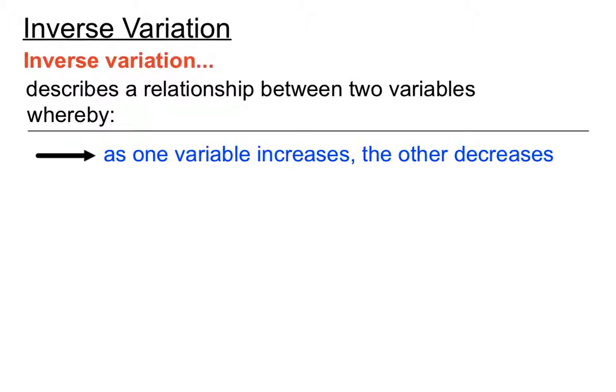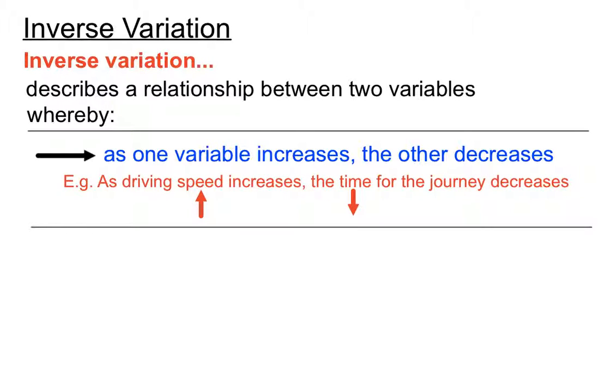Inverse variation describes a relationship between two variables whereby as one variable increases, the other one decreases. An example of that is if your driving speed increases, the time it takes for you to get to your journey actually decreases. So when one thing's going up and the other thing's going down, it's an inverse variation relationship between these two things.